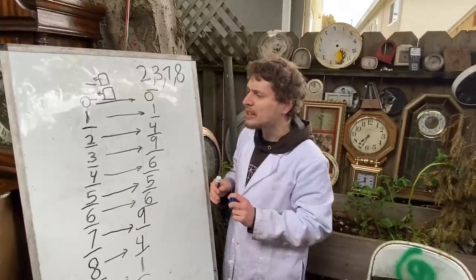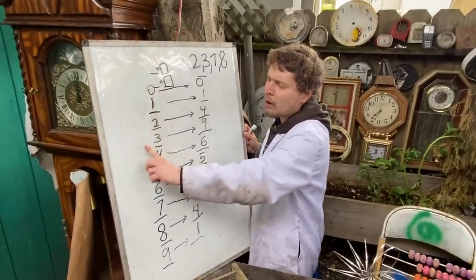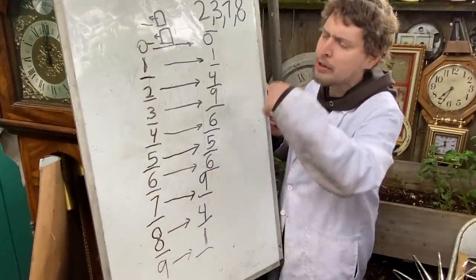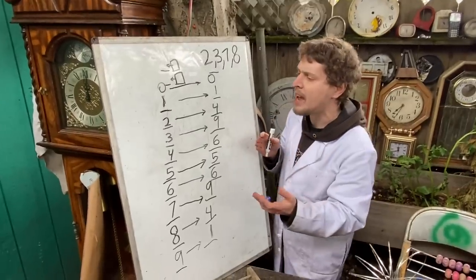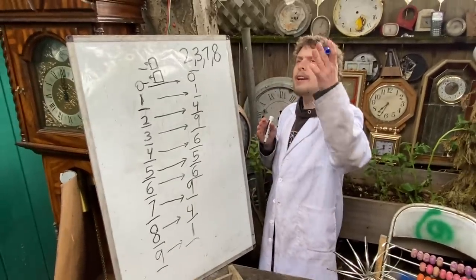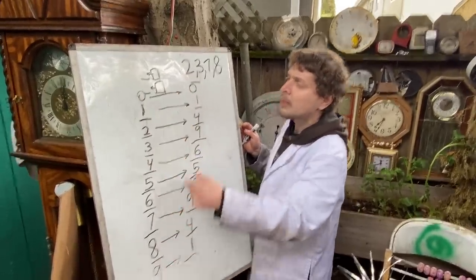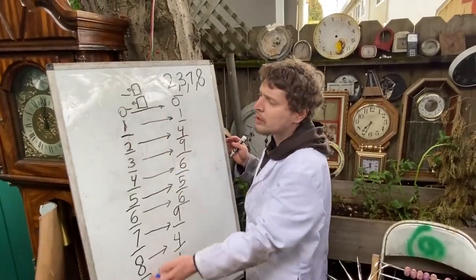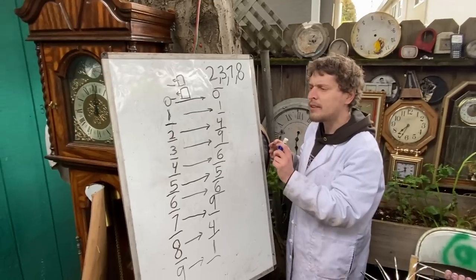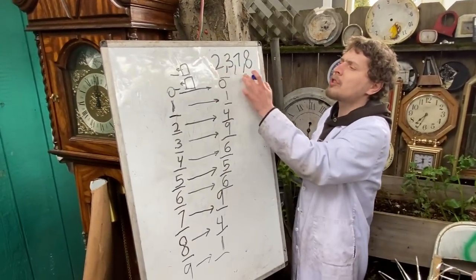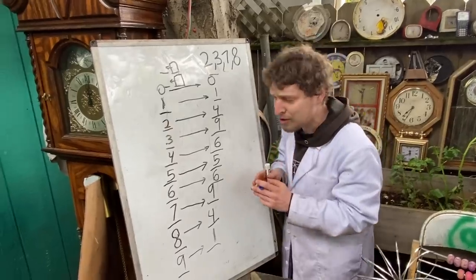Now, more technically, what's going on here is these are the values that a whole number can be congruent to in what's called mod 10. Sort of like a clock with ten things on it, spinning around, like we're going up numbers, but only looking at the last digit. And in mod 10, these numbers are known as the quadratic non-residues.